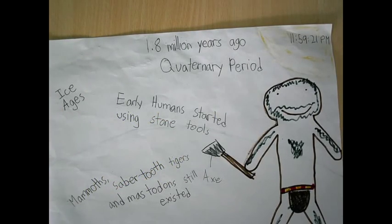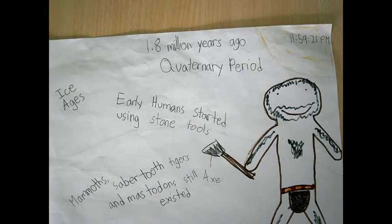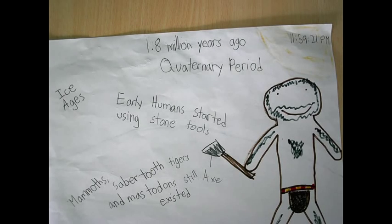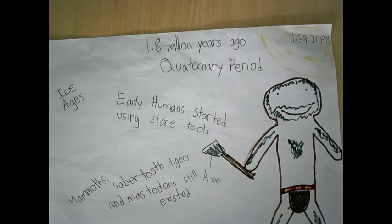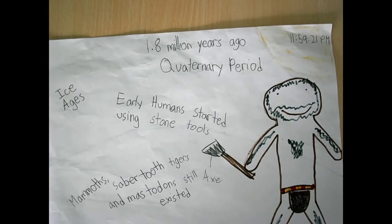1.8 million years ago, at 11 hours, 59 minutes, and 21 seconds, was the Quaternary period. There were still some ice ages coming and going, and early humans were already there, and they started using stone tools.